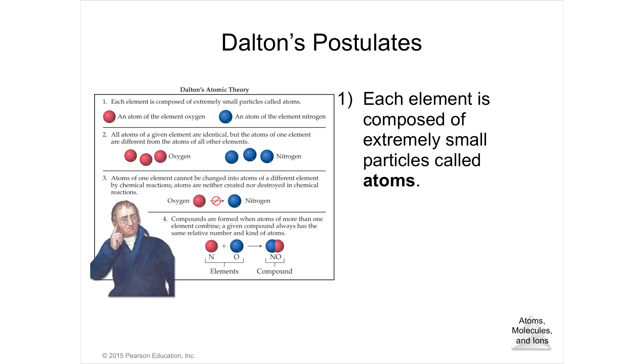The first is that each element is composed of extremely small particles called atoms. The different elements are the different, the smallest unit of the different elements are the different atoms. An atom is the smallest unit that has the same properties of that element, so you have an atom of oxygen or an atom of nitrogen.